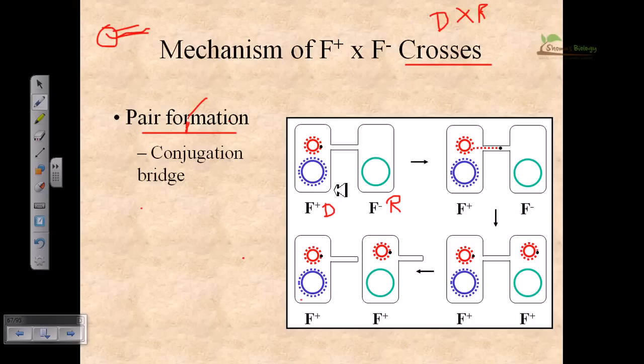Now for the importance of this pair formation, the proteins which are needed for making this pair are provided by the F plus cell or the donor cell, because the donor cell is carrying the fertility plasmid. It can produce all the pilin proteins and all these things which can make the pili from this F plus plasmid containing cell.